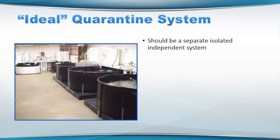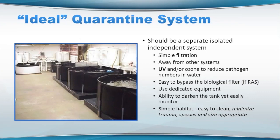So the ideal quarantine system should be separated, isolated, and independent. Simple filtration away from other systems. UV and ozone potentially to help reduce numbers of pathogens. If you can have the ability to bypass the biofilter if it's a recirculating system, to try to treat a holding unit. Dedicated equipment, and also potentially the ability to darken or lighten the tank if you need to for monitoring. Should be fairly simple, easy to clean, and appropriate for the animals that you're raising.